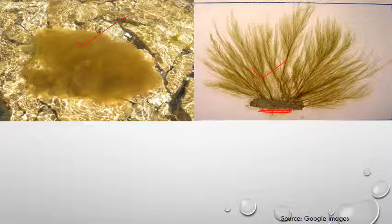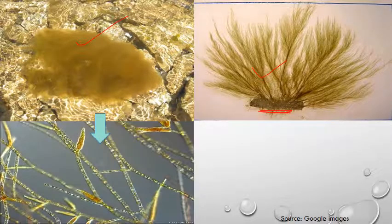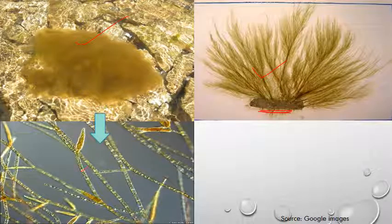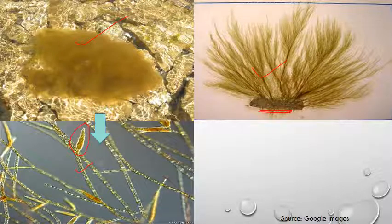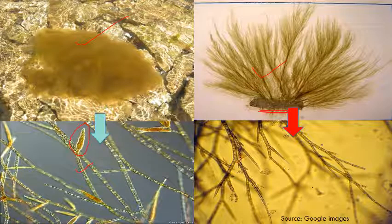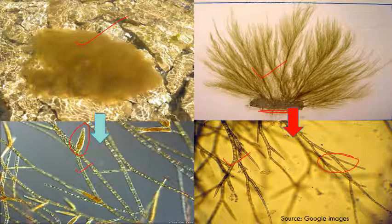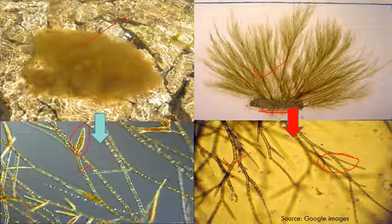If we observe Ectocarpus under a microscope, we can see its filamentous structure which is slightly brownish in color. These microscopic images show sporangia — there are two types of sporangia in Ectocarpus. These bulbous structures visible under the microscope are the sporangia of Ectocarpus.